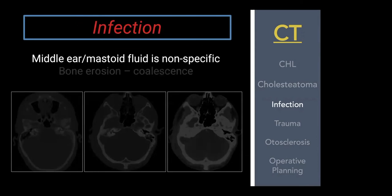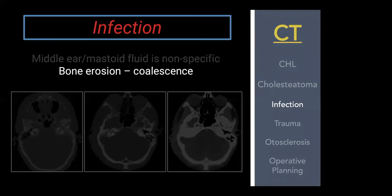We do a lot of temporal bone imaging for infection — most commonly from the ER with the indication 'rule out mastoiditis.' However, middle ear and mastoid fluid is nonspecific; fluid alone doesn't mean infection. I often turn the question back to referring physicians, since most of the time this is eustachian tube dysfunction rather than true infection. What I look for to confirm infection is bone erosion or coalescence, and CT is the imaging modality for that.